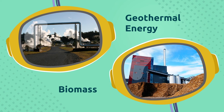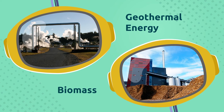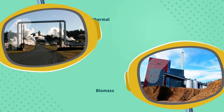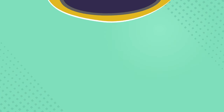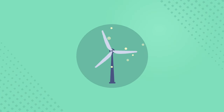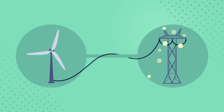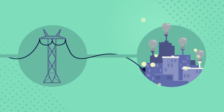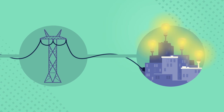There are more ways to produce electricity from natural resources, but the ones we saw today are the most common. Once electricity is created, it is transported through cables and wires to our homes, schools, and workplaces, ready for us to use.